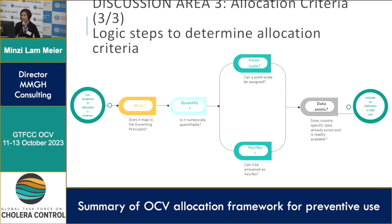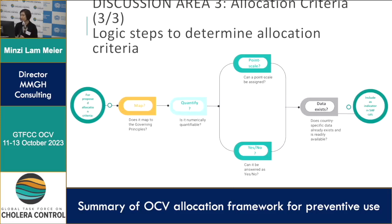When looking at what allocation criteria indicators to use, we used a logical framework with simple steps to determine what criteria to use. First, does a potential indicator map back to the governing principles? Second, is it numerically quantifiable? If it's quantifiable, can we put a scale to it — you score one if you have this, two if you have that? Or if it's not quantifiable, can you answer it yes or no, scoring one for yes and zero for no? And ultimately, does the data exist and is it readily available? We really want to create indicators using data that's readily available, with no need to go back to country to ask for more information — this is really to leverage the data that's already in their applications.